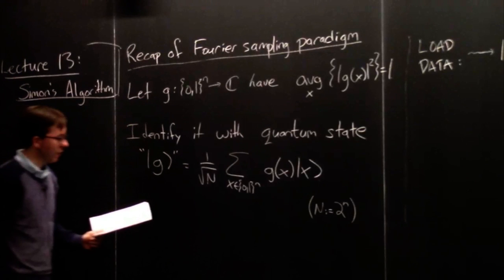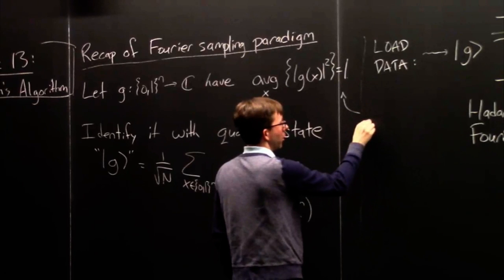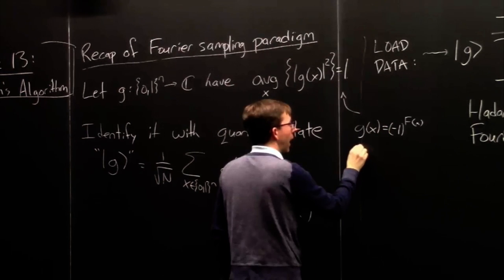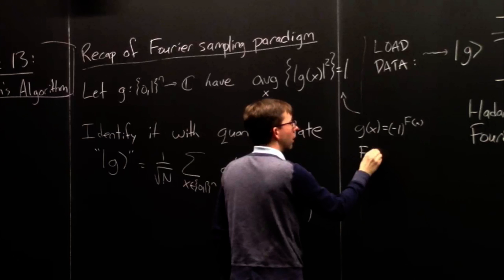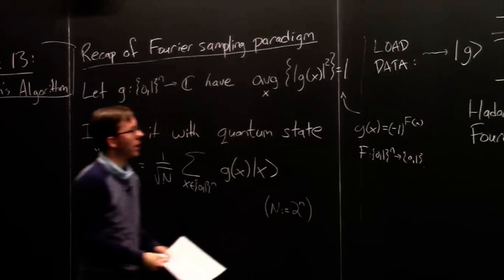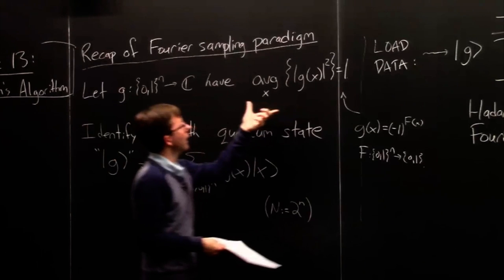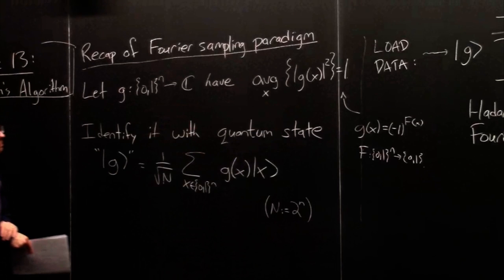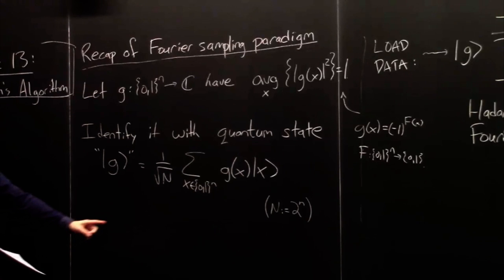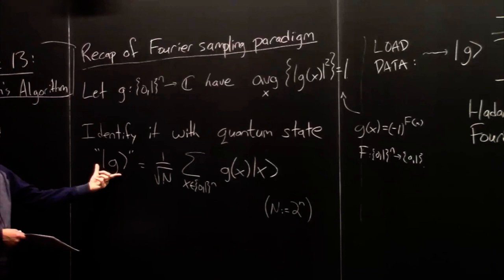A common case is when g's values are all plus or minus 1 — for example, when g(x) equals minus one to the f(x), where f is some Boolean-valued function. This is the most common way to encode the truth table of a Boolean function into a quantum state. Any g like that we can identify not just with a column vector of length N, but also with a quantum state, and we introduce the notation ket g.